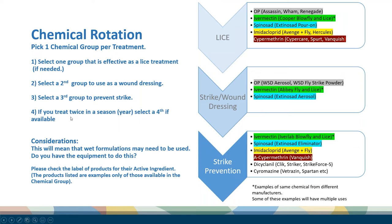If you treat twice in a season or twice in a year, rotate to another group again. If you're going to rotate between groups, you're going to have to use some sort of wet formulation. What you need to consider before starting down this path is: do you even have the equipment to be able to do this? A lot of people have filled in their old plunge dips, and there are new spray races available. If you're going to follow this, you need the correct equipment to apply those wet products.